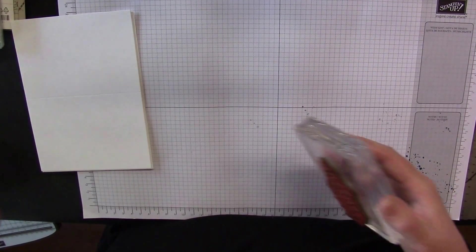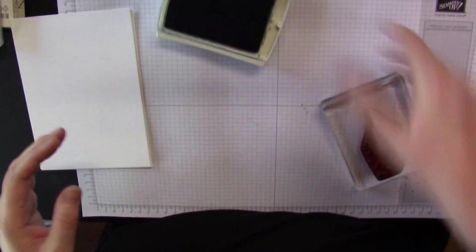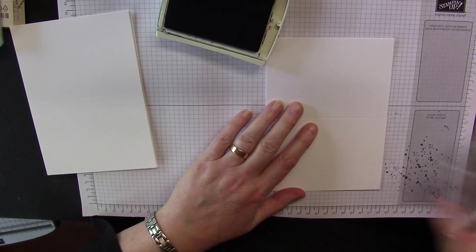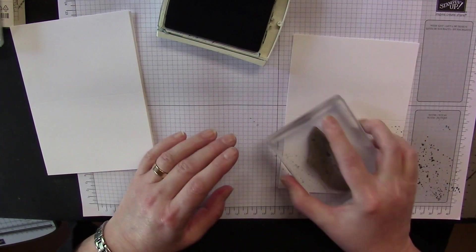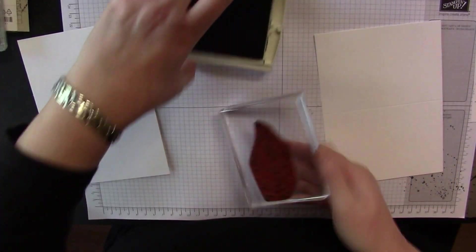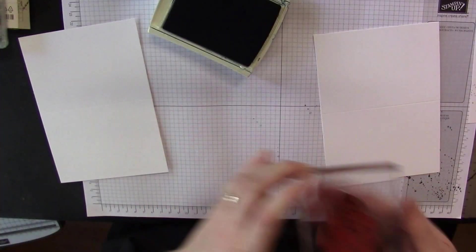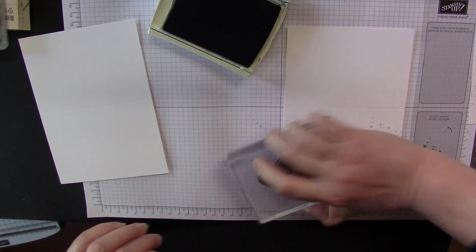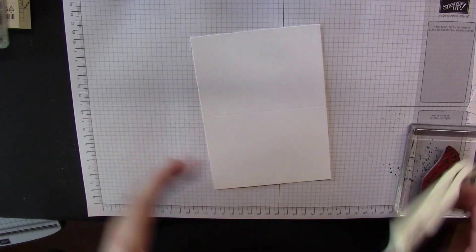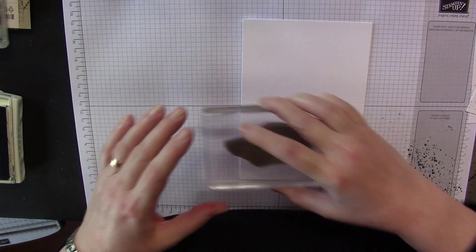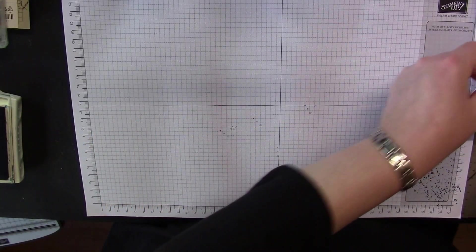And then ink up again and stamp off, you can change the directions. And then this is card number four, so stamp off. And the last one here, remembering to ink off first.